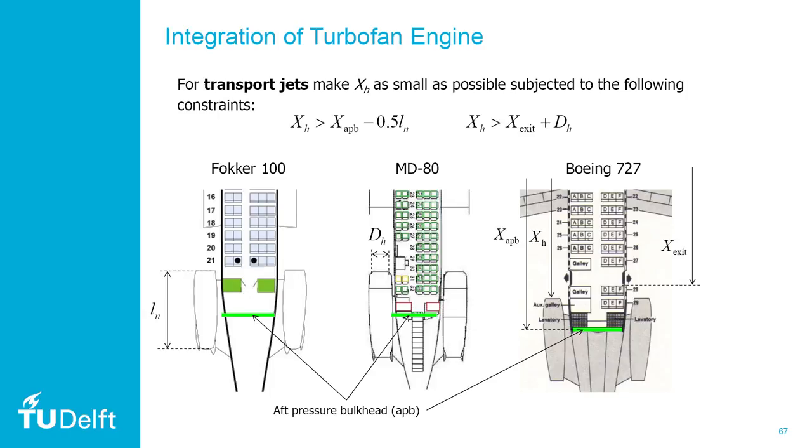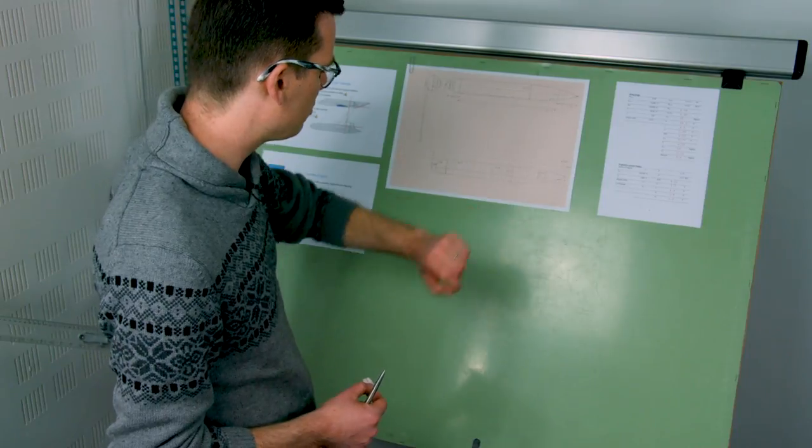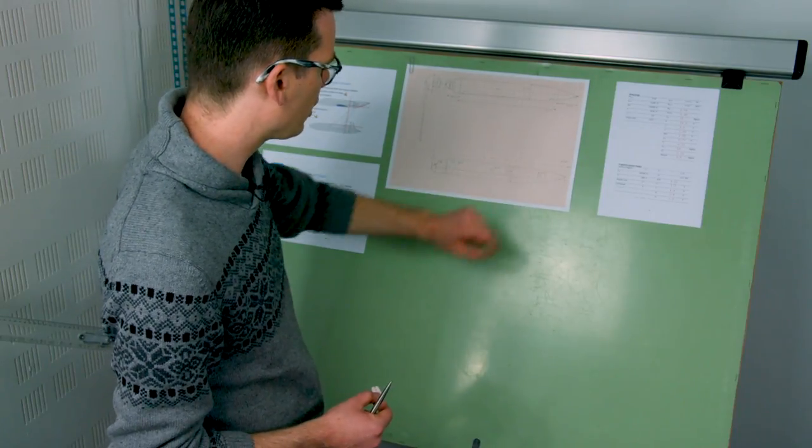The first rule says that the highlight, so the intake plane of the engine needs to be at least an inlet diameter behind the rear exit. Now we have already drawn in the rear exit so we are going to see how that would work if we would do that.